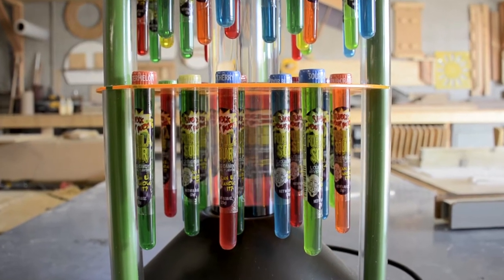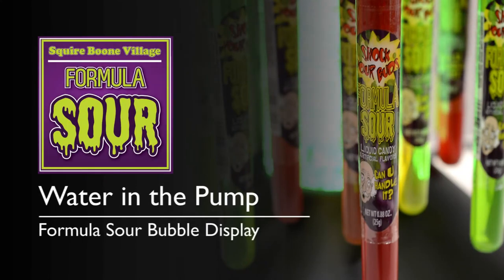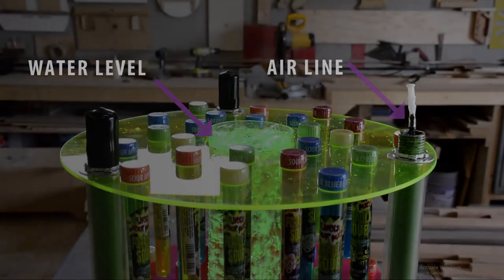If there are still no bubbles, we'll next check the air line. If the air line falls inside the support pole and drops below the water level in the water tube, it can cause water to get in the pump.